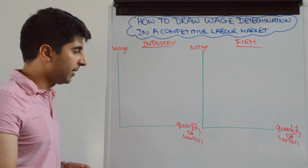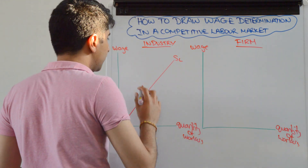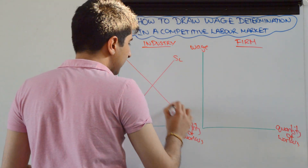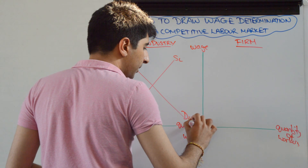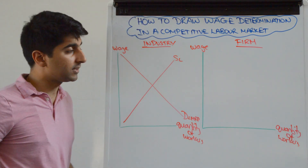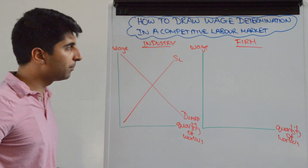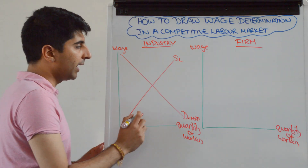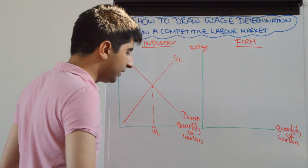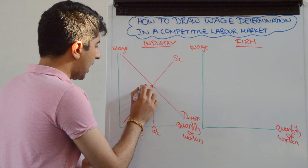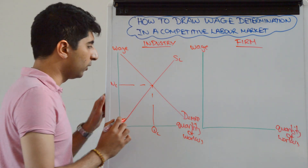In the industry, wages are determined where supply — which is just upward sloping — and demand — which is downward sloping, equal to MRP — meet. So you draw your supply and demand, a very simple labour market here. Where the two meet, we have quantity of workers, called QC, and we have the wage, importantly, called WC. That is the wage determined in the labour market.